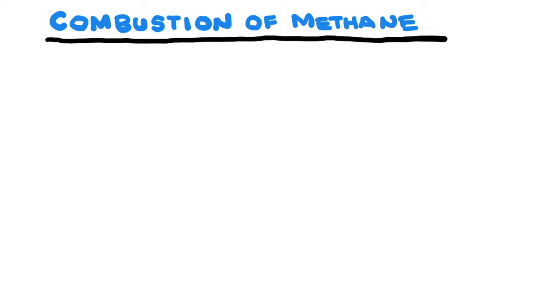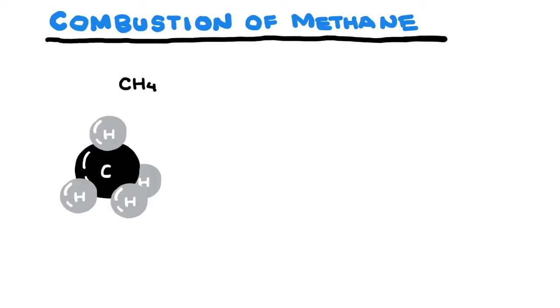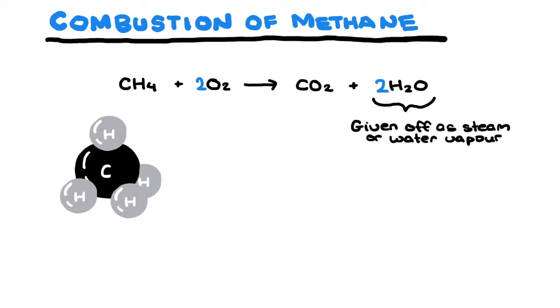Natural gas and LPG, liquefied petroleum gas, contain methane, made up of one carbon bonded to four hydrogens. When reacted with enough oxygen, methane combusts to produce carbon dioxide and water. The water given off is steam or water vapour during the reaction and energy.